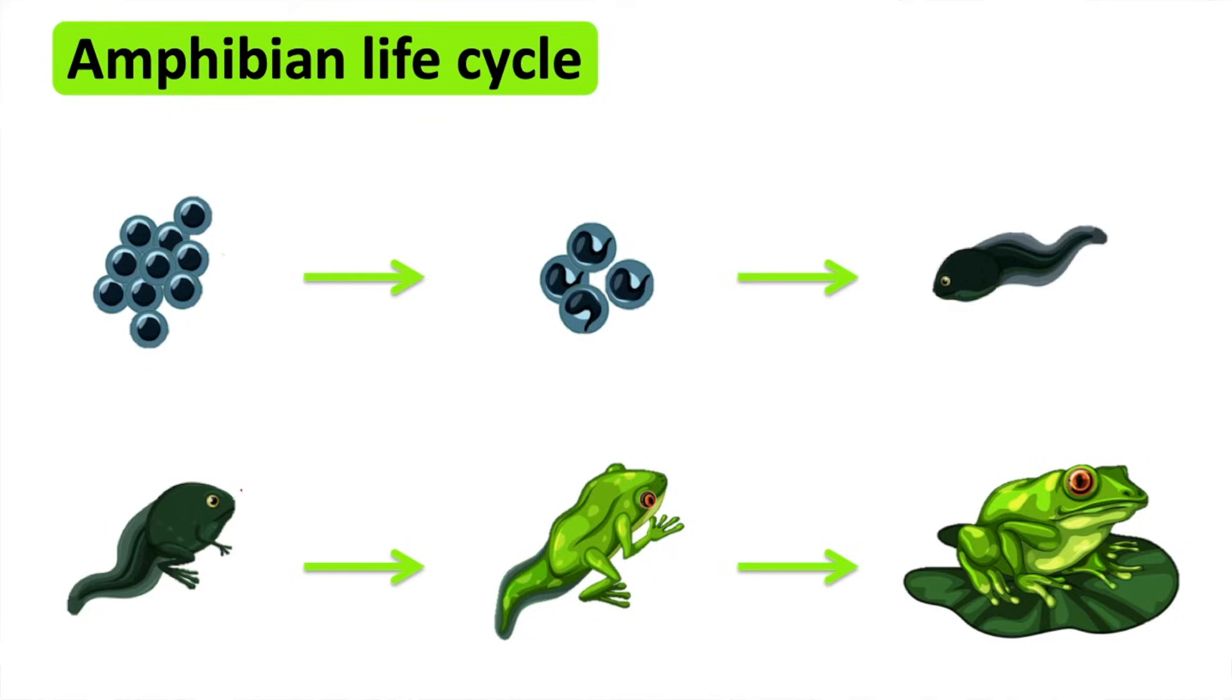After a few weeks they grow their back legs and then their front legs. Its tail shrinks away and the baby frog emerges out of the water. The baby frog continues to grow into an adult frog.